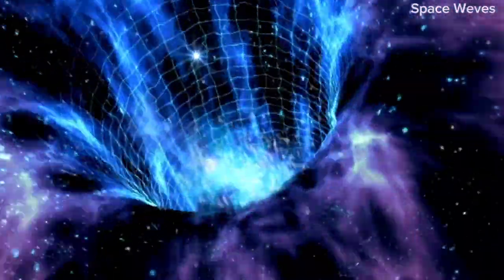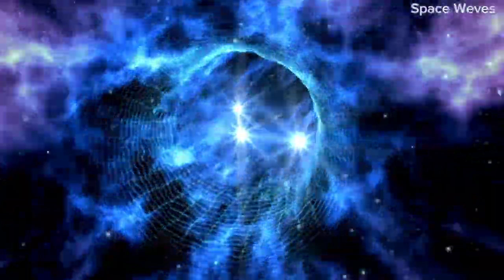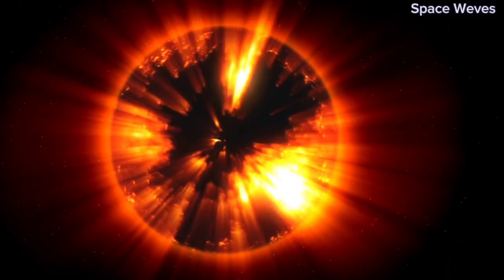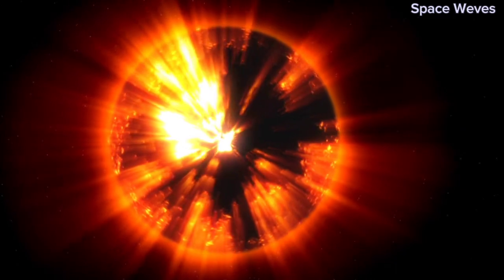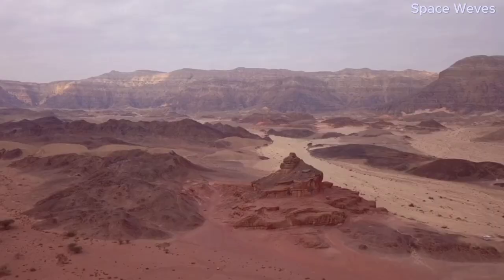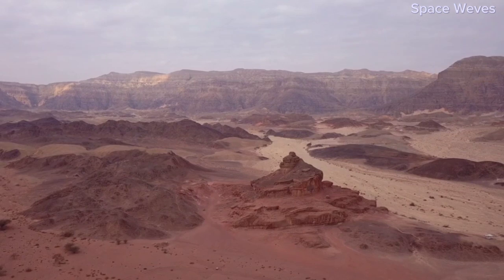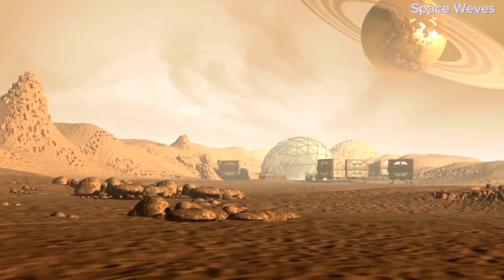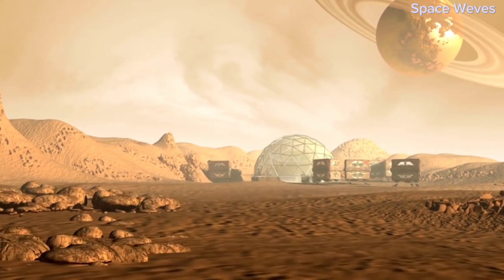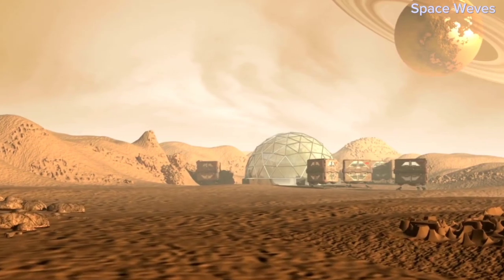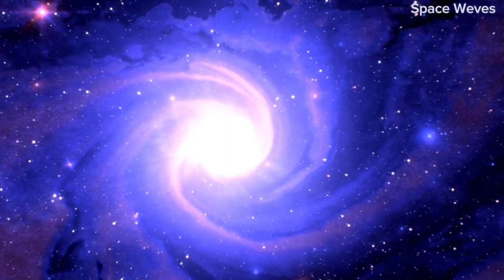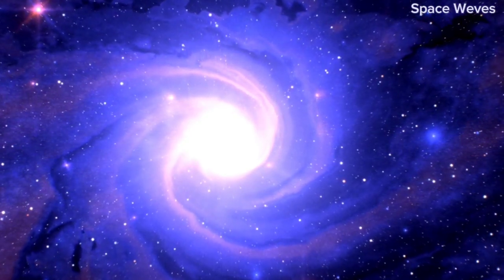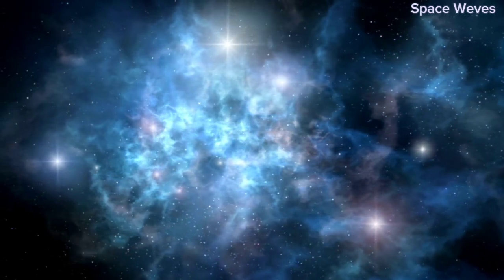One of the most astonishing aspects of the universe is its size. The most distant objects we can observe are about 47 billion light-years away, meaning the observable universe is approximately 94 billion light-years across. This may seem strange, given that the universe is only 13.8 billion years old. How could the observable universe be larger than the time it would take light to travel across it?